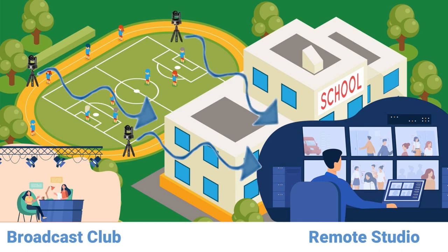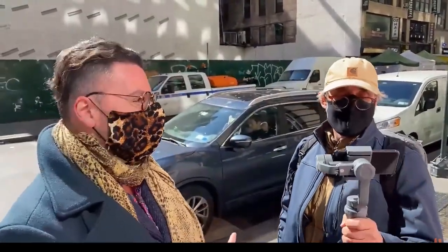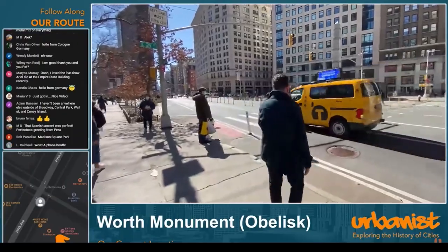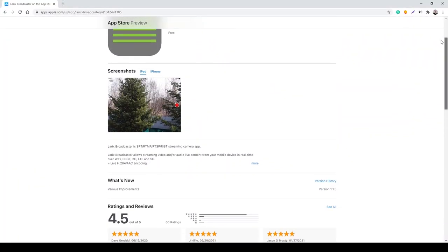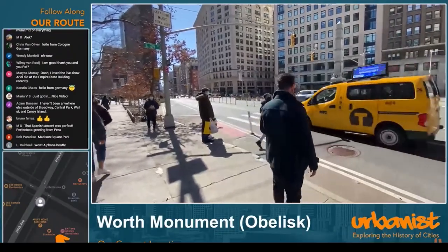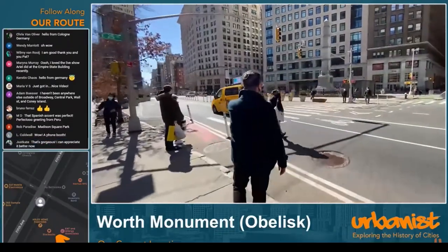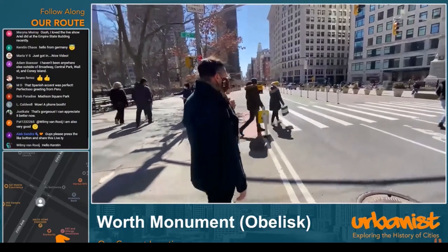One of our favorite use cases for SRT is remote production with a couple of 5G-connected cell phones. The Urbanist recently produced a multi-camera tour of New York City using the Laryx Broadcaster app on an iPhone 12 camera. These cameras were able to send 2 to 3 megabits per second of quality video streams back to a production PC,